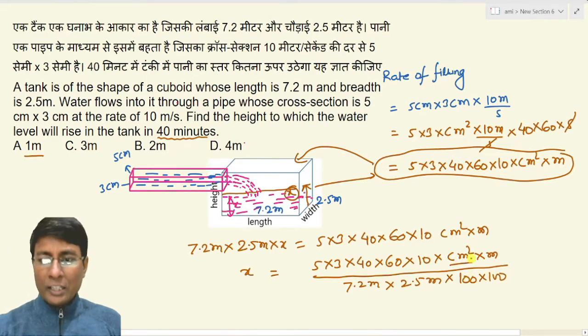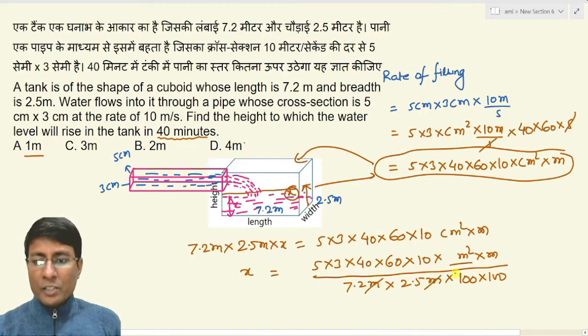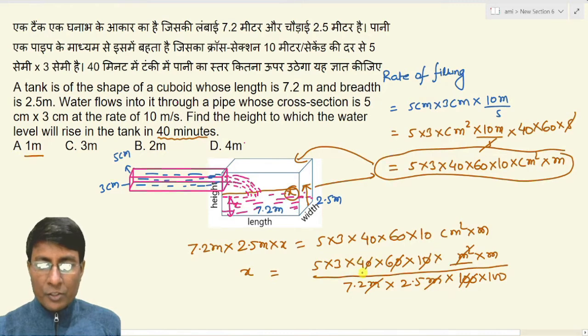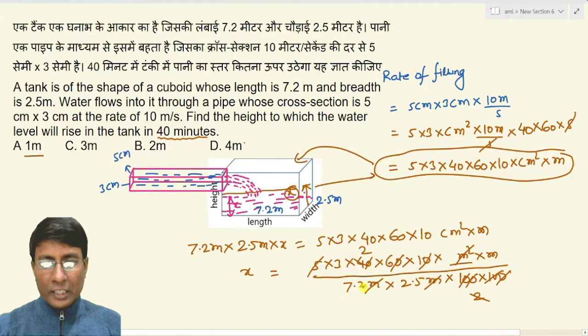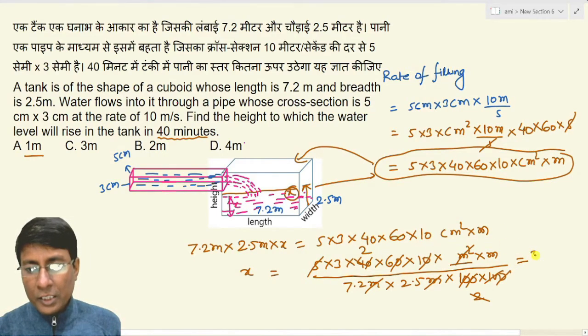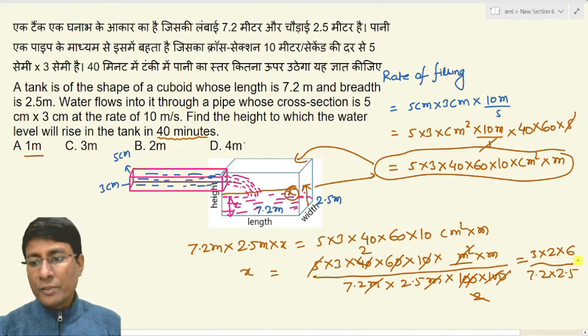Here's centimeters squared, so this will need to be converted. You can convert simply by dividing by 100 squared. Ultimately the centimeters will change to meters, meter squared will cancel with meter squared. Here 40 into 60 gives seconds, then 10 cancels with 10, then divide by 10 again. 5 becomes 2 times when divided by 2. So ultimately the numerator value is 3 into 2 into 6, and denominator value is 7.2 into 2.5.